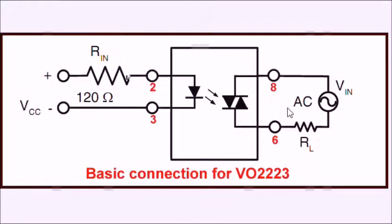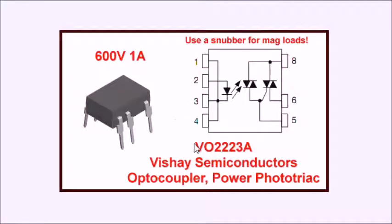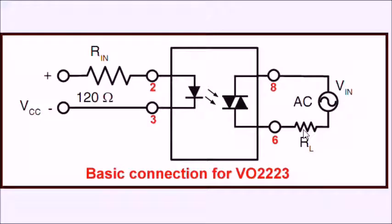The same thing holds true with the VO2223A. If you're going to use this to drive an inductive load, if this is a resistive load, if you're going to do an inductive load, you have to put the snubber across pins 6 and 8.